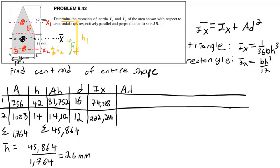Computing AD squared for each piece: 16 squared times 756 equals 193,536. For piece two: 1,008 times 12 squared equals 1,008 times 144, which is 145,152.